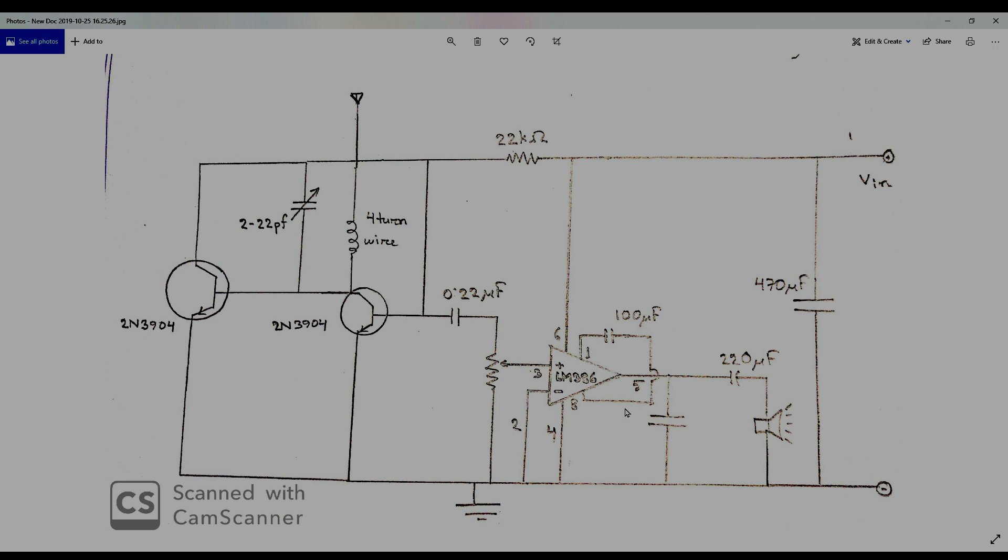Now if the amplification isn't strong enough, we can add a capacitor from pin number one to pin number eight of this IC. It will increase the gain of the IC and will make the audio signal loud enough so that we can hear it.